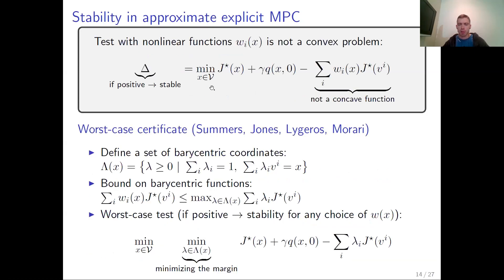However, this optimization problem is not convex for a general choice of nonlinear functions omega_i. So we have to modify the problem. Let's consider a worst-case certificate proposed by Summers, Jones, Lygeros, and Morari. Define a set of barycentric coordinates as follows: the bound on the barycentric function is given by the upper bound provided for the worst possible choice of barycentric coordinates. The worst-case test looks for the worst possible choice of state and barycentric coordinates minimizing the following expression. If the optimal cost of this problem is positive, then for every possible choice of barycentric functions, delta must be positive.